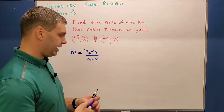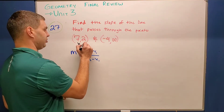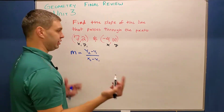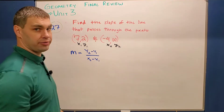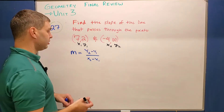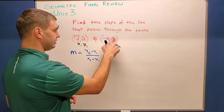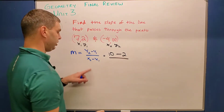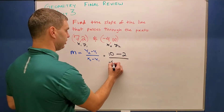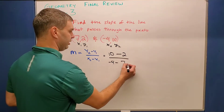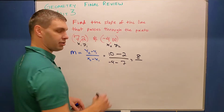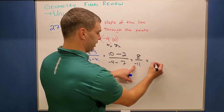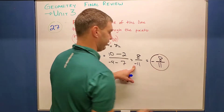We take our two points and label them: the first point is (x1, y1) = (7, 2) and the second point is (x2, y2) = (-4, 10). Plugging into the formula: m equals 10 minus 2 over negative 4 minus 7, which gives us 8 over negative 11. That cannot simplify further, so the slope is negative 8 elevenths.